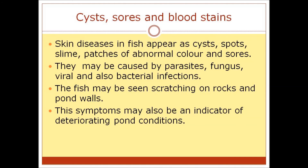Concerning cysts, sores, and blood stains: skin diseases in fish appear as cysts, spots, slime, patches of abnormal color, and sores. They may be caused by parasites, fungus, viral, and bacterial infections. The fish may also be seen scratching on rocks and pond walls. These symptoms may also be an indicator of deteriorating pond conditions.